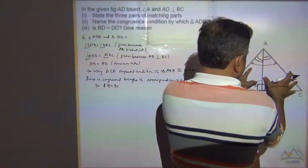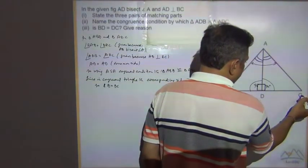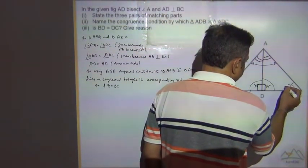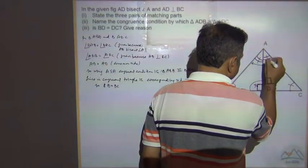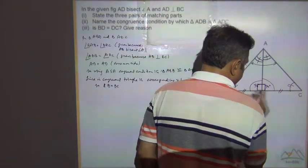When these two triangles are congruent, B will follow C, so this angle will be equal to this angle, and this side will be equal to this side.